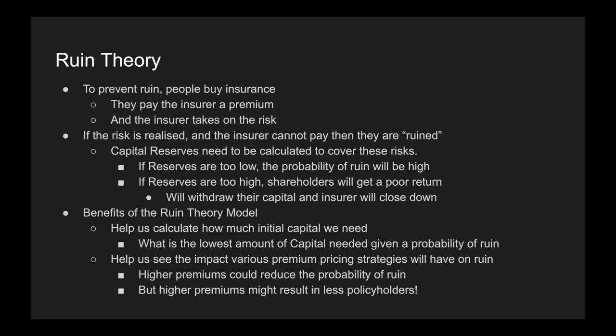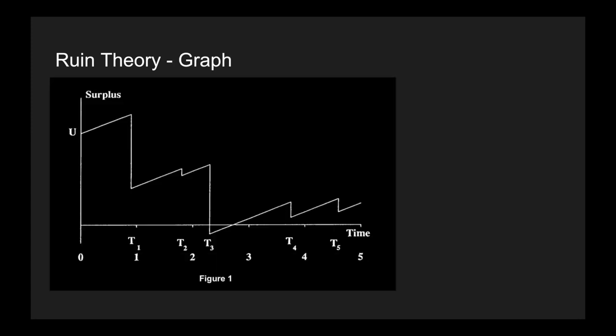Now let's visually see what ruin theory looks like. We've got a graph where U is our initial capital, given by the blue line. A very important parameter is duration, given on our x-axis. On our y-axis we have our capital or reserves, and U is the initial amount. We then have premiums, which we assume we're receiving continuously — some people paying today, some tomorrow — giving us a continuous stream of premiums that increases our capital position.